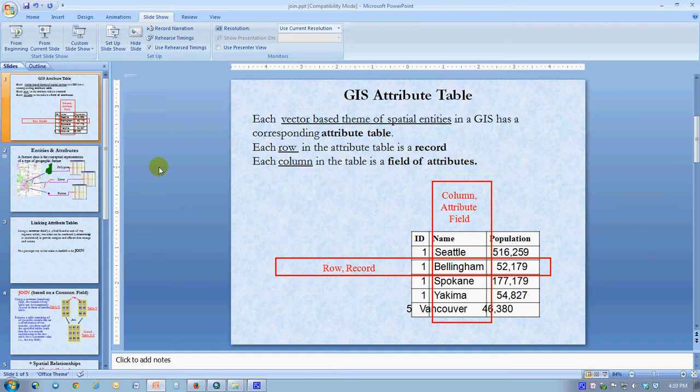There's always value in having extra information stored in an attribute table which describes the features in a layer.